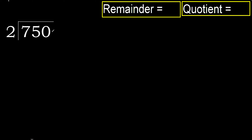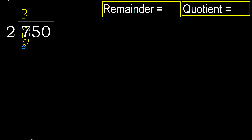750 divided by 2. 7 is not less, therefore with 7: 2 multiplied by which number is nearest to 7 but not greater? 2 multiplied by 4 is 8 — that is greater. Multiply by 3: 6 is not greater. 7 minus 6 is 1.